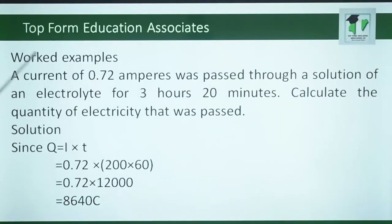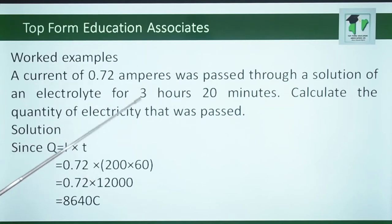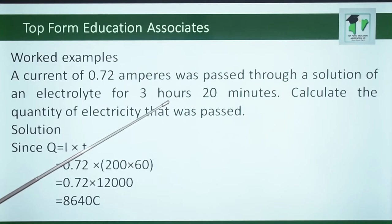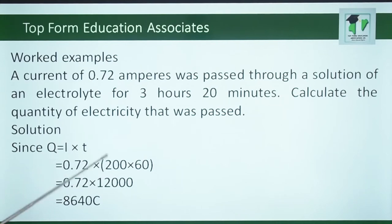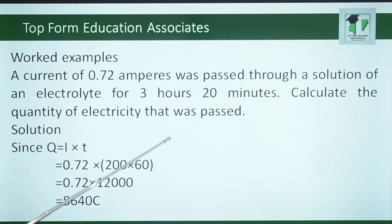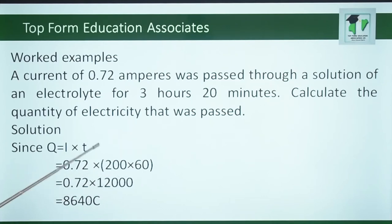Worked example 1. A current of 0.72 amperes was passed through a solution of an electrolyte for 3 hours 20 minutes. Calculate the quantity of electricity that was passed. Since Q equals IT, we convert 3 hours 20 minutes to seconds and then multiply by the current of 0.72 amperes to give us 8,640 coulombs.